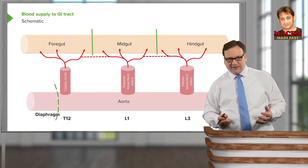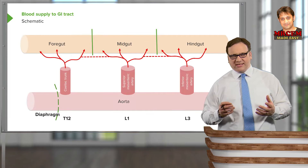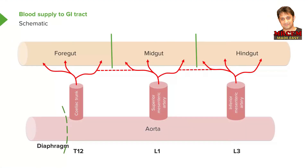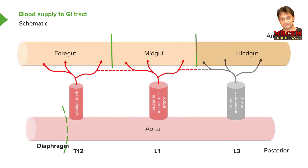Looking at this schematic, the aorta runs parallel to the gastrointestinal tract. This is the GI tract all the way along here — anterior aspect and posterior aspect — as if you were lying on your back viewed from the side. We can see the diaphragm indicated in green. The aorta passes through the diaphragm, and at various points along its course, the celiac trunk, the superior mesenteric artery, and the inferior mesenteric artery are given off.